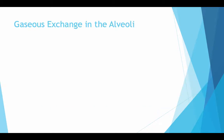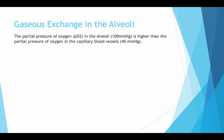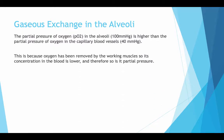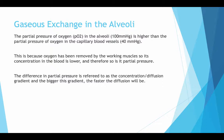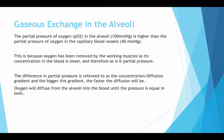Gaseous exchange in the alveoli: the partial pressure of oxygen in the alveoli is higher than the partial pressure of oxygen in the capillary blood vessels. This is because oxygen has been removed by the working muscles, so its concentration in the blood is lower and therefore so is its partial pressure. The difference in partial pressure is referred to as a concentration difference gradient, and the bigger the gradient, the faster the diffusion will be. Oxygen will diffuse from the alveoli into the blood until the partial pressure is equal in both.